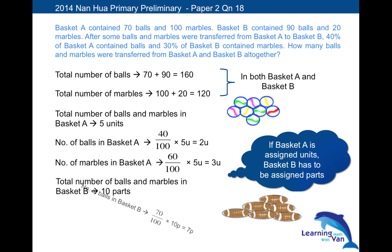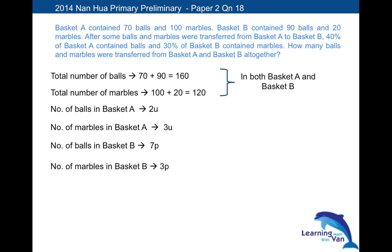And then from there, work out what is the number of balls in basket B in terms of parts. Bear in mind, this is a bit tricky. Because now they talk about 30% of basket B contains marbles. At first it was balls and now they talk about marbles. So periodically, students are encouraged to check to make sure that they get the correct percentage. So number of marbles in basket B will be 30%, which is 3 parts. So these are the information that we have just worked out.